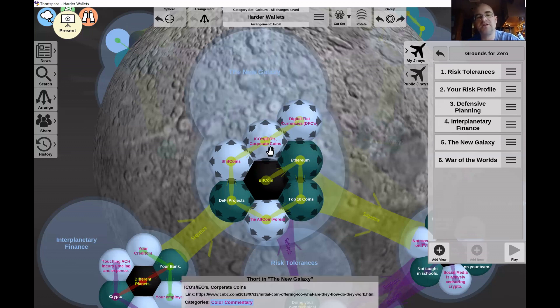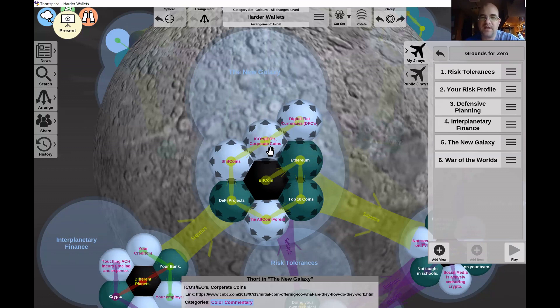And beyond that, you want to get into, you want to know what an ICO, initial coin offering, or an IEO, initial exchange offering. These are corporate coins. These are essentially a replacement for the stock exchange.